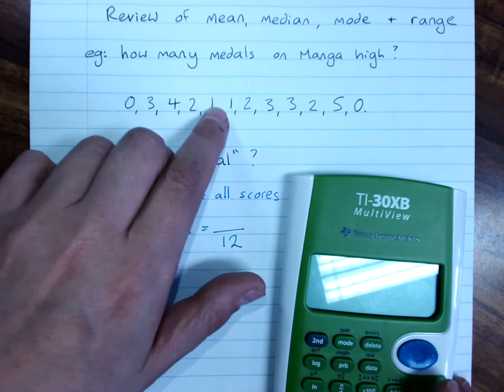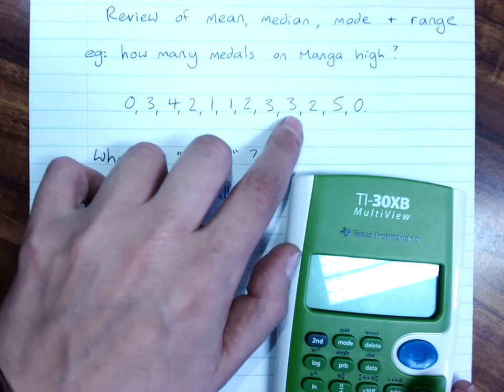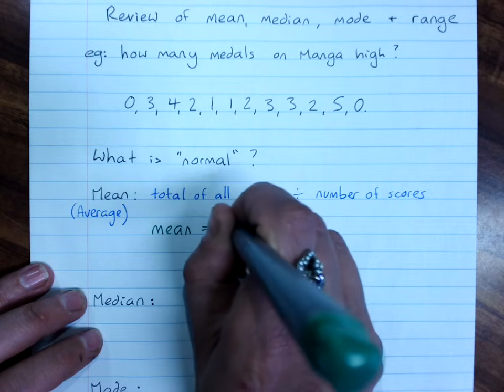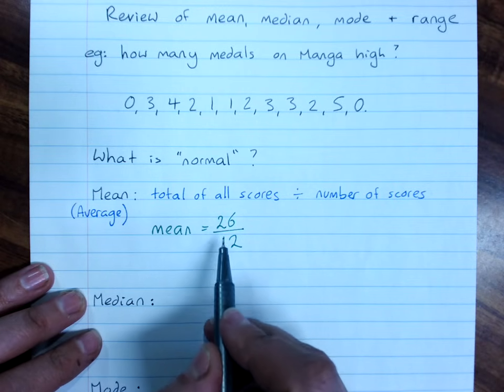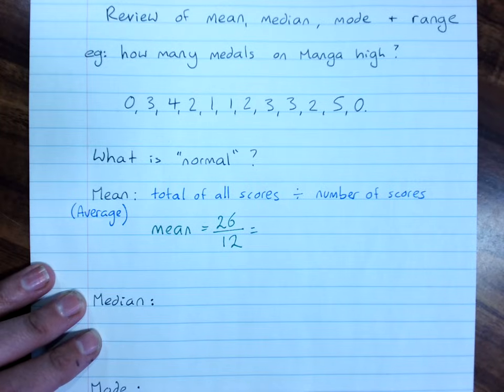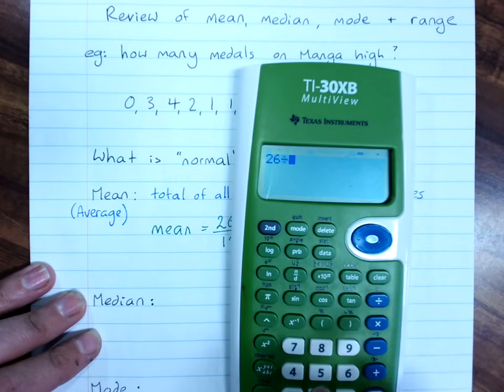7, 10, 13, 16, 19, 26. So my class all up got 26 medals, and there were 12 students in the class.